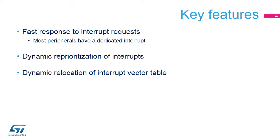The NVIC provides a fast response to interrupt requests, allowing an application to quickly serve incoming events. Most peripherals have a unique interrupt vector, making development easier with less need to programmatically determine the source of an interrupt during processing. The interrupt vector table can also be relocated, which allows the system designer to adapt the placement of interrupt service routines to the application's memory layout.